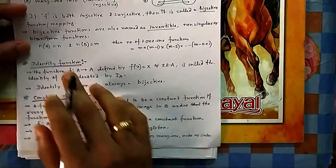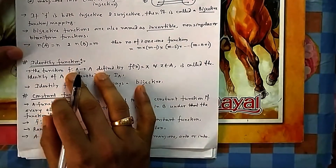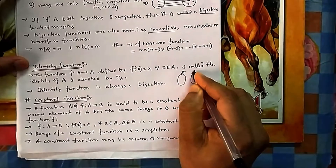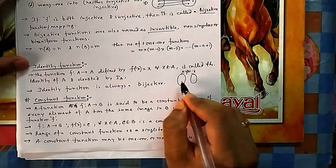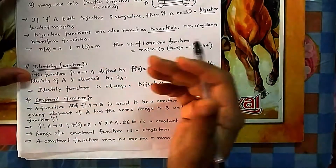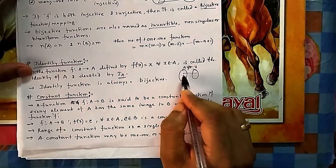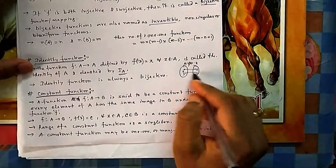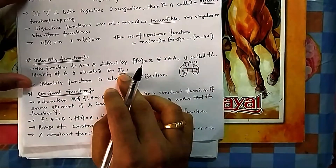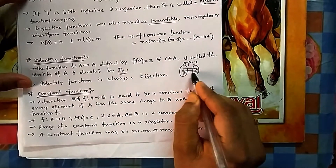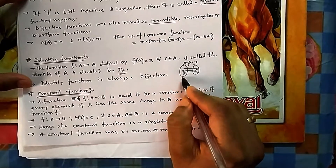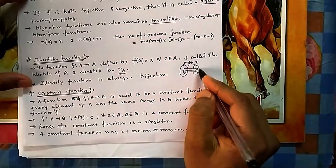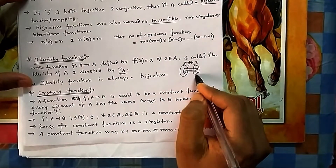An identity function f: A → A is defined as f(x) = x — the same element on both sides, so input equals output. It is denoted by i_A. For example, 2 maps to 2, 3 maps to 3. The identity function is always bijective because it is always one-one and onto.